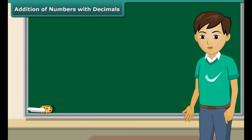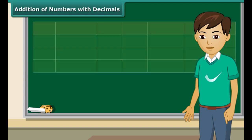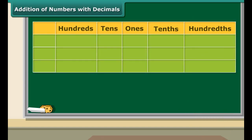Addition of decimals is similar to addition of any other numbers. Write the given numerals one below the other with the decimal points in a vertical line. First, add the digits after the decimal point starting with the rightmost digit. Any carry over from the decimal side is carried over to the integer side.